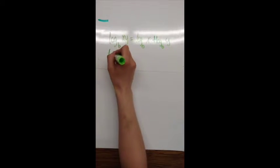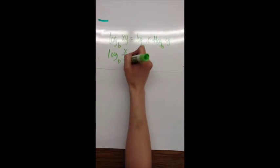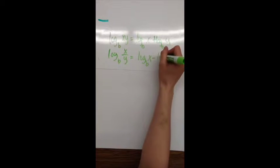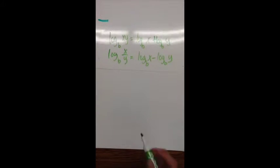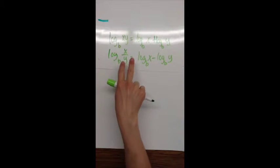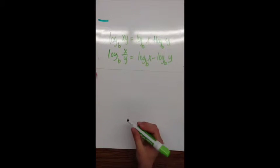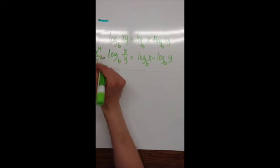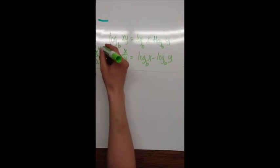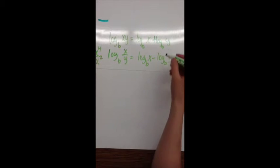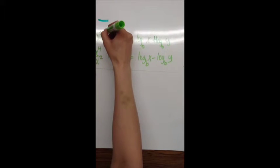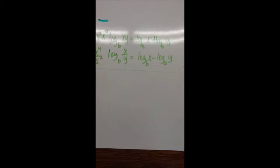I also have log base b of x divided by y, and that can be written as log base b of x minus log base b of y. Here I have a subtract from dividing, which is similar to your exponent rules — if I had x to the fourth over x squared, I would subtract the 4 and the 2. And then for multiplying, if I had x squared times x to the fourth, I would end up adding the two exponents instead.